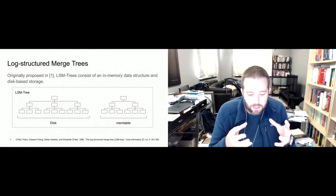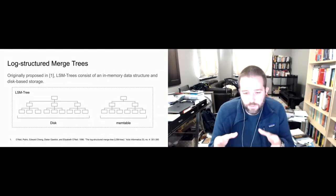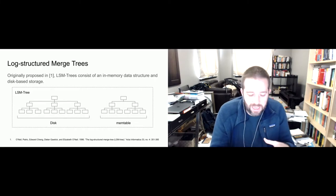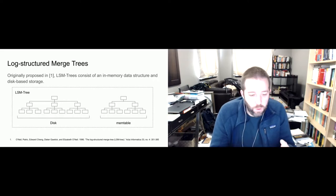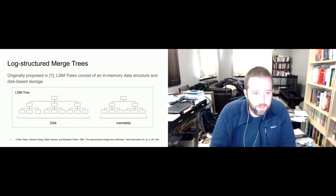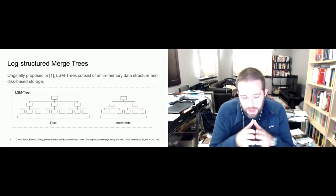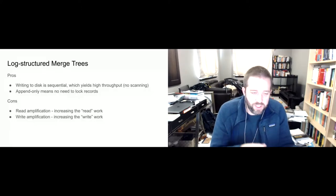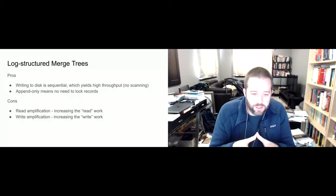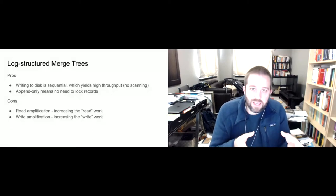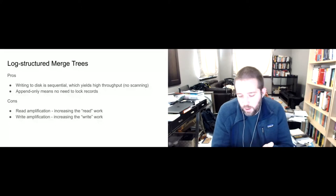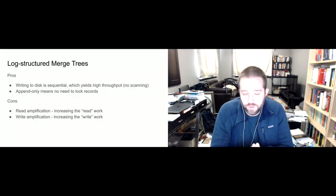The structure on disk is what gets flushed from the mem table. In the case of Cassandra, the LSM tree uses an SS table. The advantage of the LSM tree is that when the mem table hits some capacity threshold, it gets persisted to disk in a single sequential write — there's no seeking involved on disk, so it's very fast. When the mem table is flushed, it's an append operation, typically just creating a new file, and we don't need any locks for this flush.